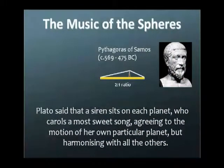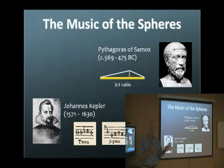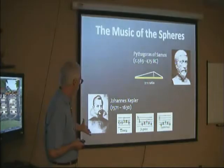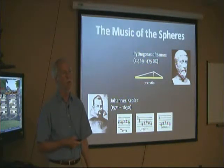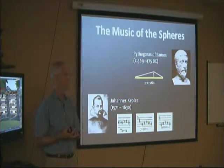That was such a powerful idea that 2,000 years later, when the great German Johannes Kepler — the first real physicist in astronomy — was trying to figure out the motions of the planets, for a decade he tried to fit the orbits of the planets and their periods to musical notation because he believed in the music of the spheres. And what made him great is that after a decade of work, he said this just isn't working, I'm going to give up on my cherished idea.